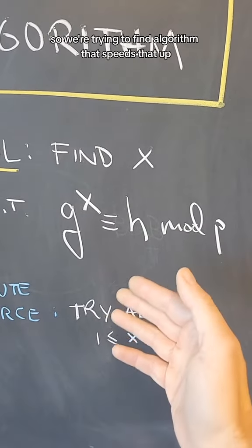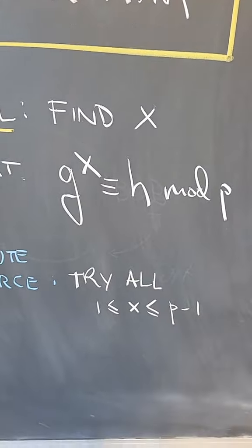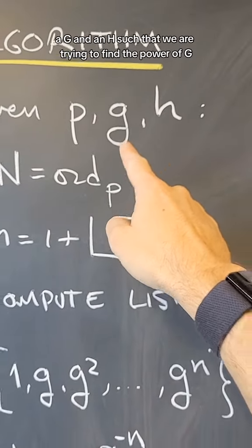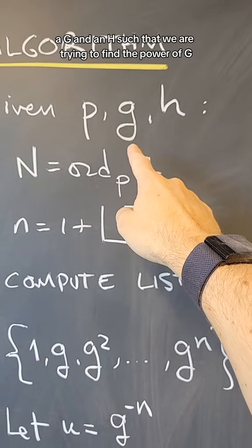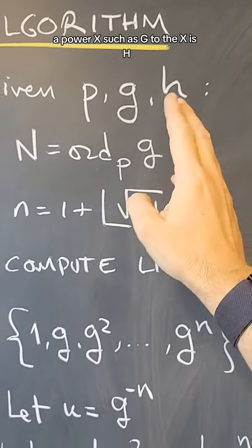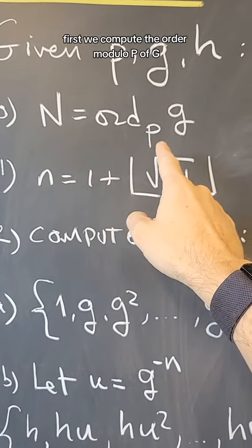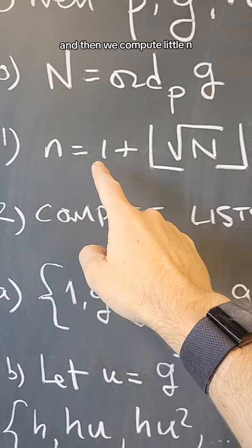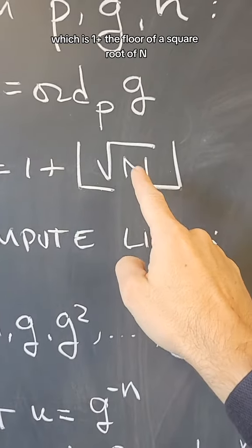We're trying to find an algorithm that speeds that up. Here's how the algorithm works. We're given p, g, and h, and we're trying to find a power x such that g to the x is h. First, we compute the order modulo p of g, that's capital N, and then we compute little n, which is 1 plus the floor of the square root of N.